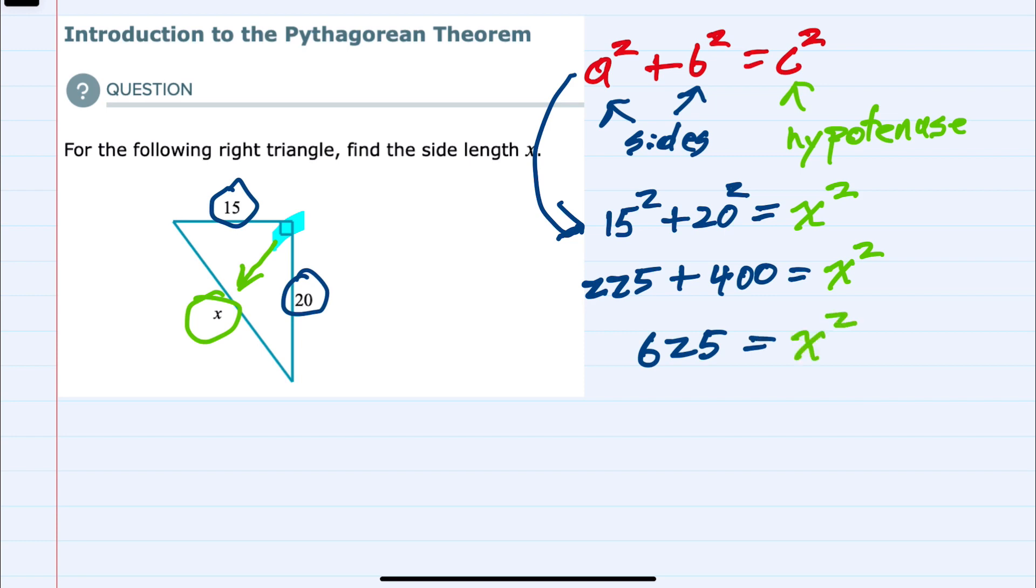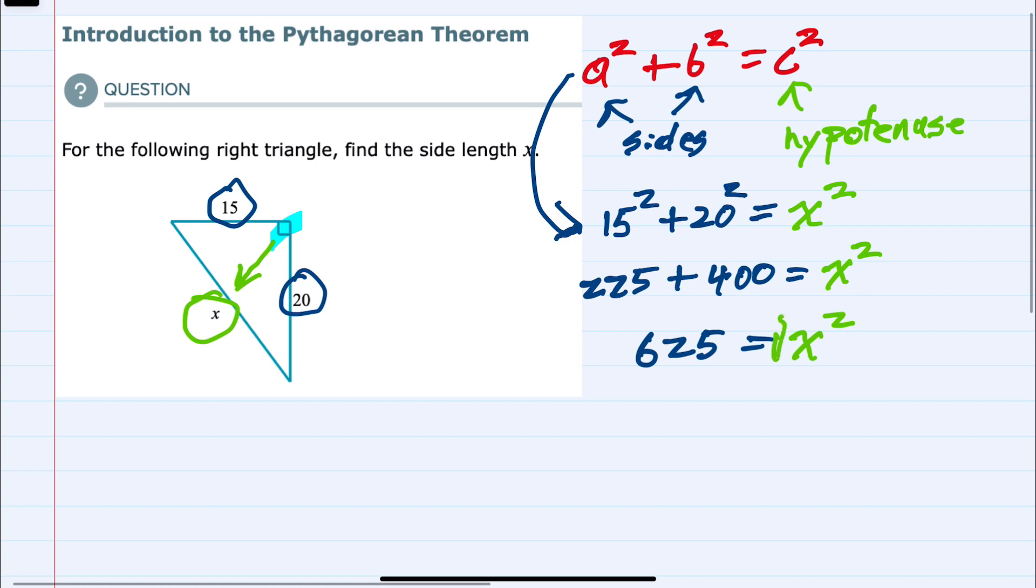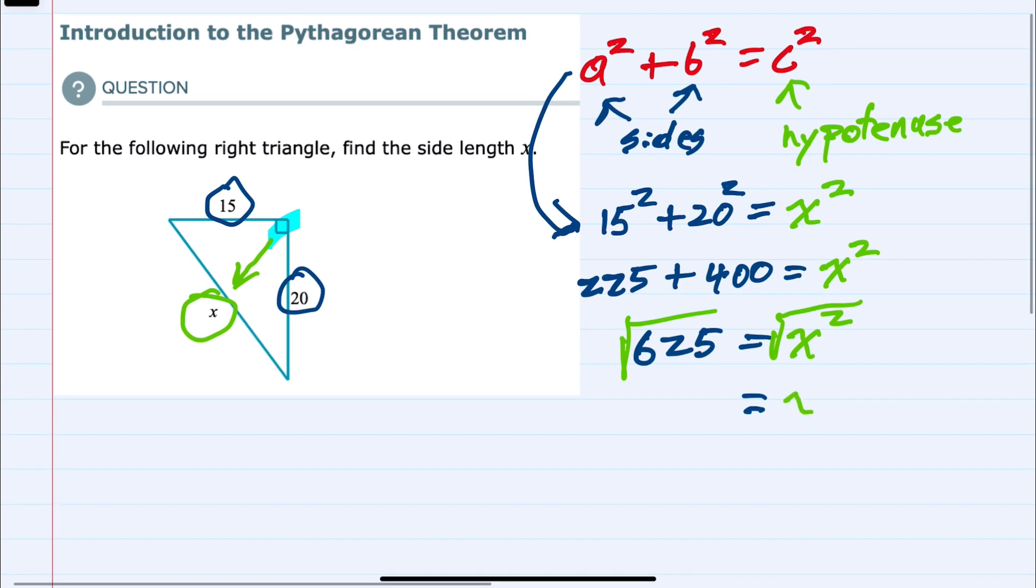To find the value of x, I can take the square root of both sides. On the right-hand side, the square root of x squared is x, and getting x by itself was our goal for taking the square root.